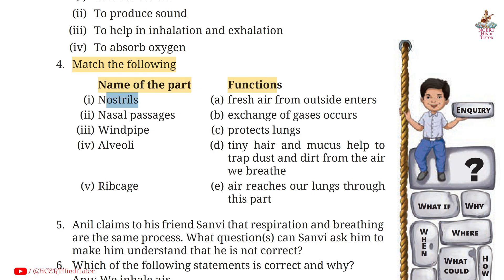Question 4: Match the following — Name of the part and Functions. 1. Nostrils — A: fresh air from outside enters. 2. Nostril passages — D: tiny hair and mucus help to trap dust and dirt from the air we breathe. 3. Windpipe — E: air reaches our lungs through this part. 4. Alveoli — B: exchange of gases occurs. 5. Ribcage — C: protects lungs.